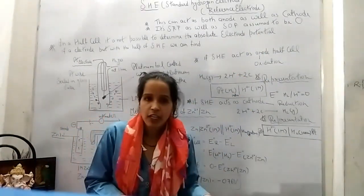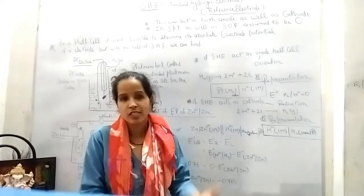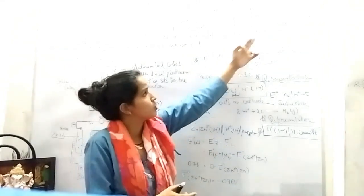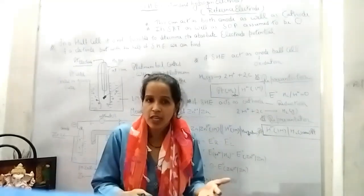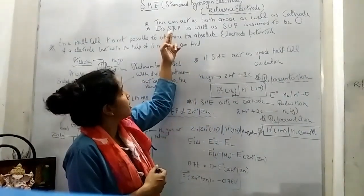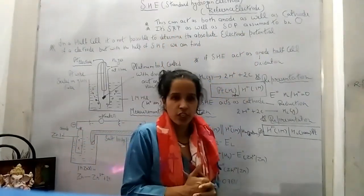If it is working as an anode, then oxidation occurs, and standard oxidation potential is assumed to be zero. If it acts as a cathode, it means reduction occurs, then SRP means standard reduction potential is assumed to be zero.